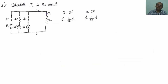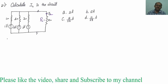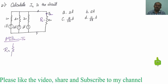Starting with the first question: we have to calculate the load current IL. We are given a practical voltage source connected in parallel, and a load RL equal to 10 ohms. This concept is based on Millman's theorem. We have to find the equivalent Millman's resistance and the equivalent Millman's voltage, then connect a load resistance RL.